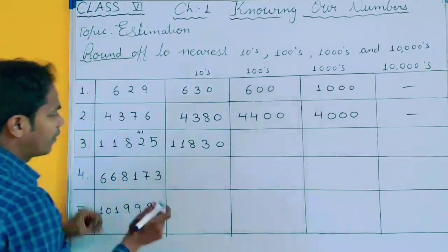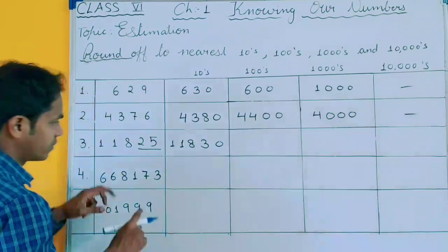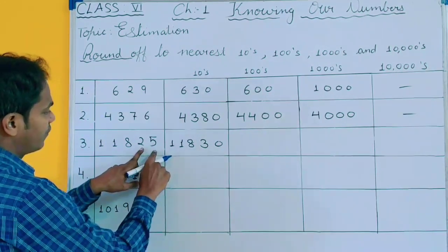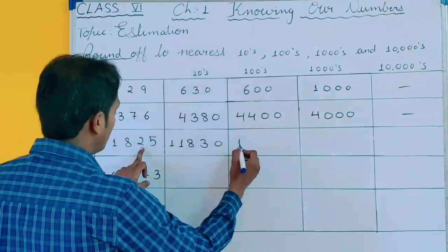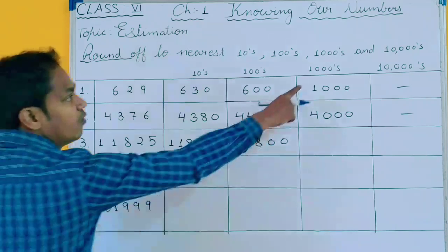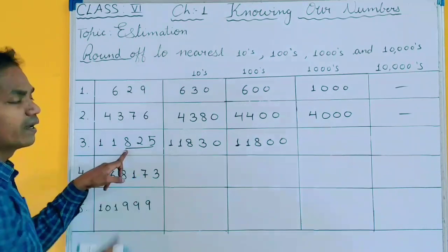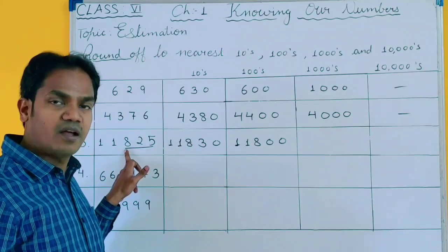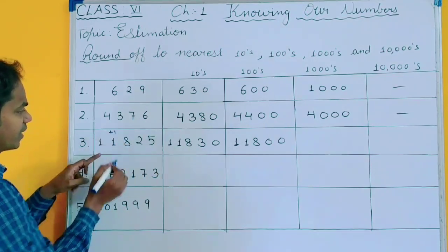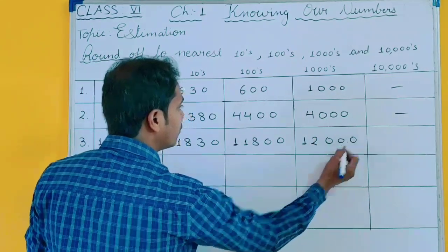For rounding off to 100, you will check the last two values: 25. It is less than 50, so you will not do plus 1 — the result is 11,800. For rounding off to 1000, you will check the last three values; it must be 500 or more than 500. This is more than 500, so you will do plus 1 here — giving 12,000.